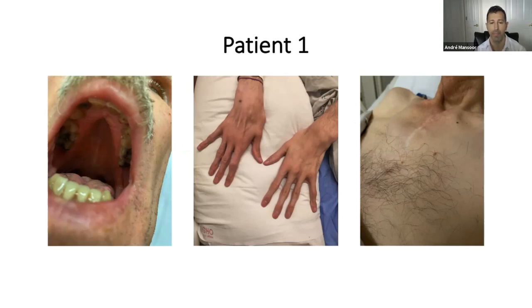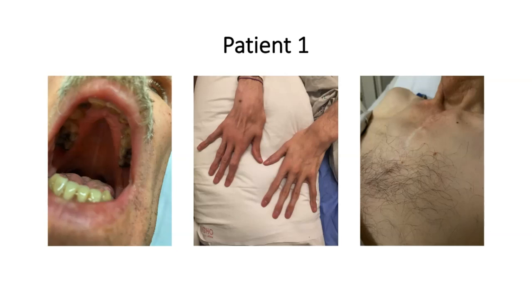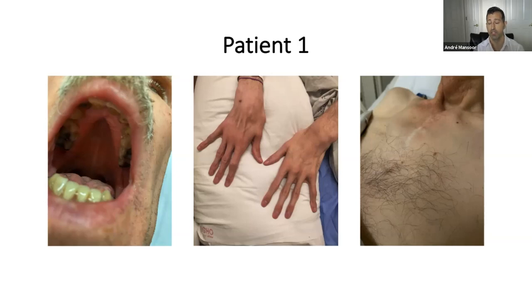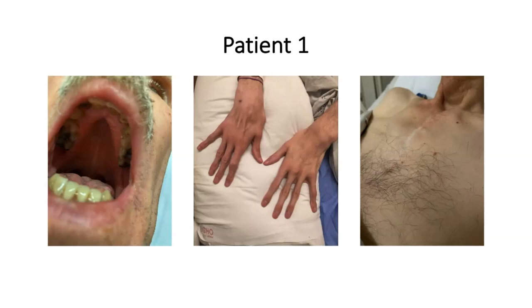I'm going to illustrate how important those first two steps of the diagnostic process are by taking us through three cases. In each of these cases, the patient presented with dyspnea. Let's look at patient number one — there are three findings illustrated side by side: a photo of the patient's mouth, a photo of the patient's hands, and a photo of the patient's chest wall. What findings are present here and how can we unify them to make a diagnosis?